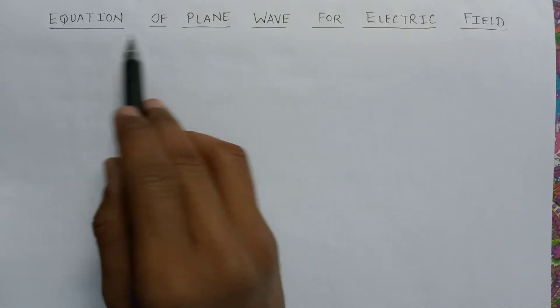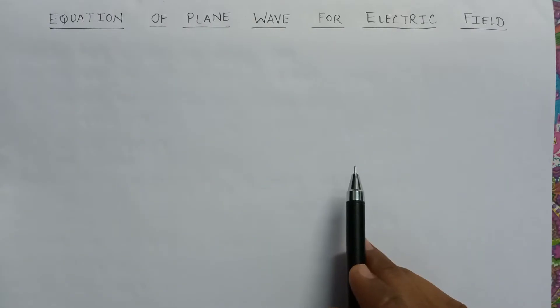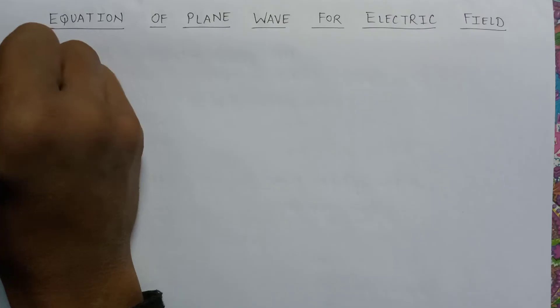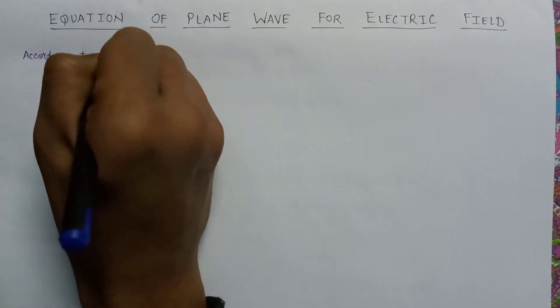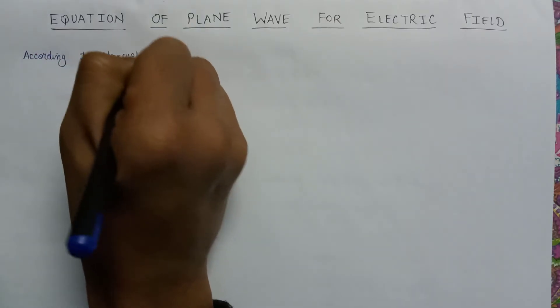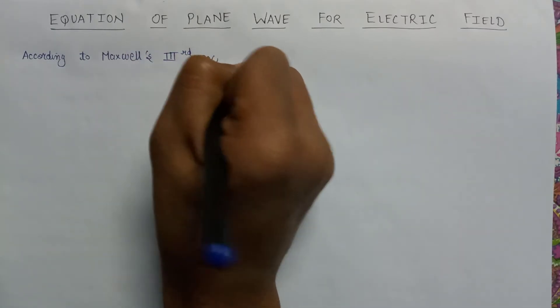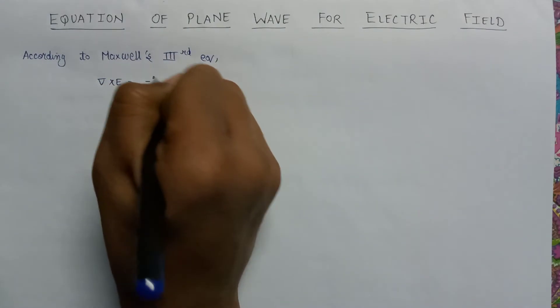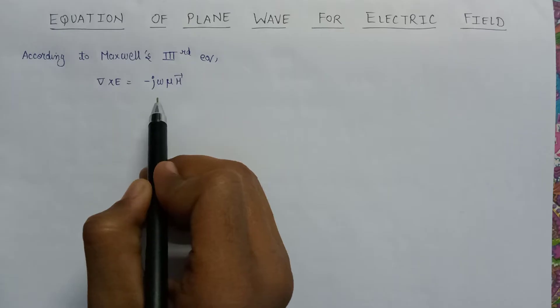Welcome. In this lecture we are going to discuss about the equation of plane wave for electric field. As we discussed in the previous lecture, Maxwell's third equation in phasor form is given as del cross E equals to minus j omega mu into H.